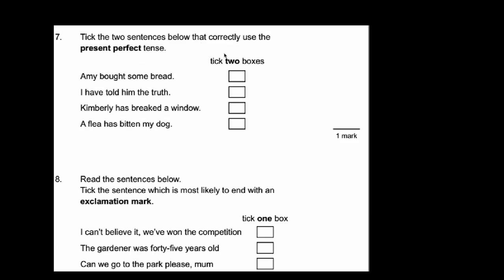Number 7. Tick the two sentences below that correctly use the present perfect tense. Okay, with the present perfect we're looking for some clues. Look at this section here. Amy bought some bread. Well that straight away we know it can't be right because it's not in the present at all. It's in the past. I have told him the truth. Could be in the past or it could potentially be in the present as well if we think about it. Moving on to this one. Kimberley has braked a window. We definitely know that's not great because 'braked' isn't a word.